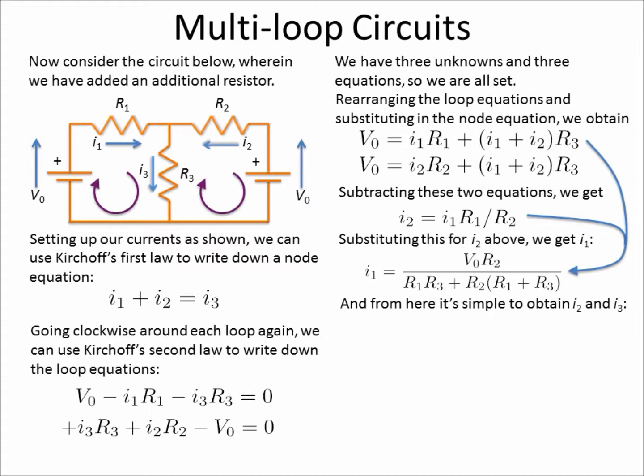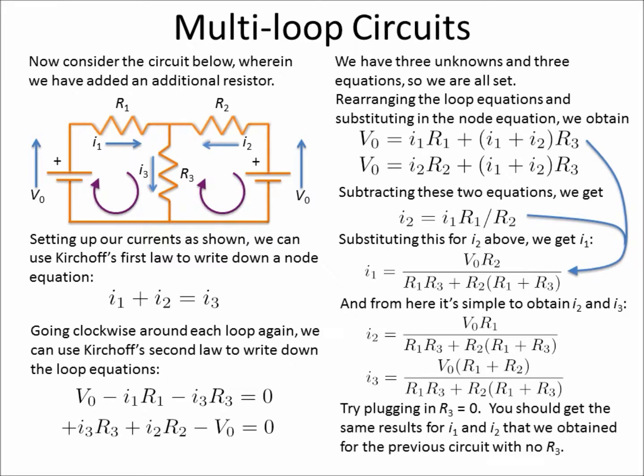From here, we can substitute back in. We can take this and substitute back in for I2, and I2 has a very similar looking relationship, which is not surprising because the two parts of the circuit look very similar. And finally, I3 can be solved in the same way.